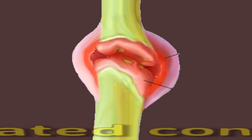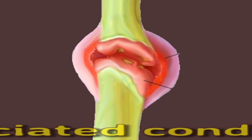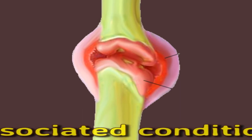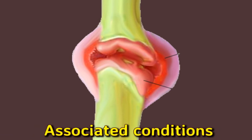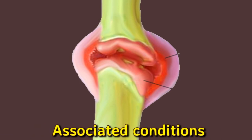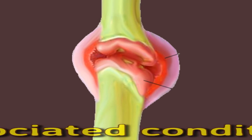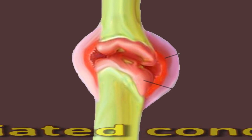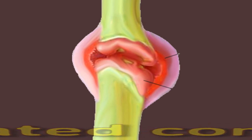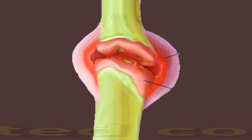Associated conditions: polyarthritis is not a specific condition, and people with it may initially present to their doctor with something else of concern. For instance, early polyarthritis may cause someone to feel very tired or have flu-like symptoms. There are some conditions that can accompany polyarthritis or be a sign that there is another underlying problem.